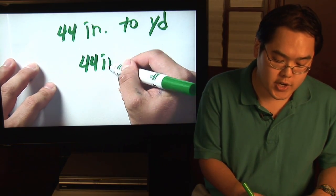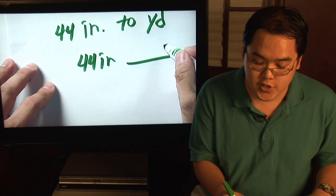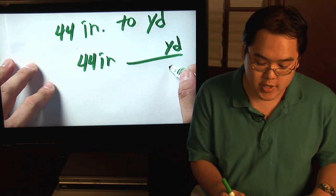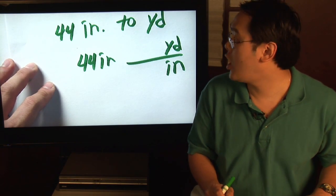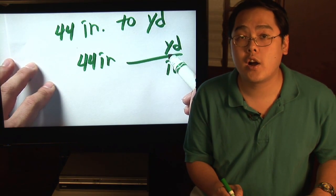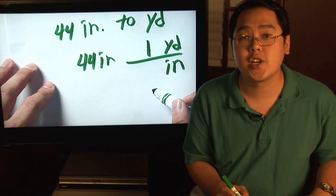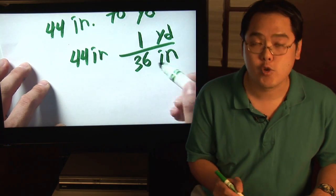Take 44 inches, now because you want to convert to yards, yards will go on top, inches would be at the bottom. Again, put the numbers where they belong. One yard, 1 is 36 inches, 36 will be at the bottom.